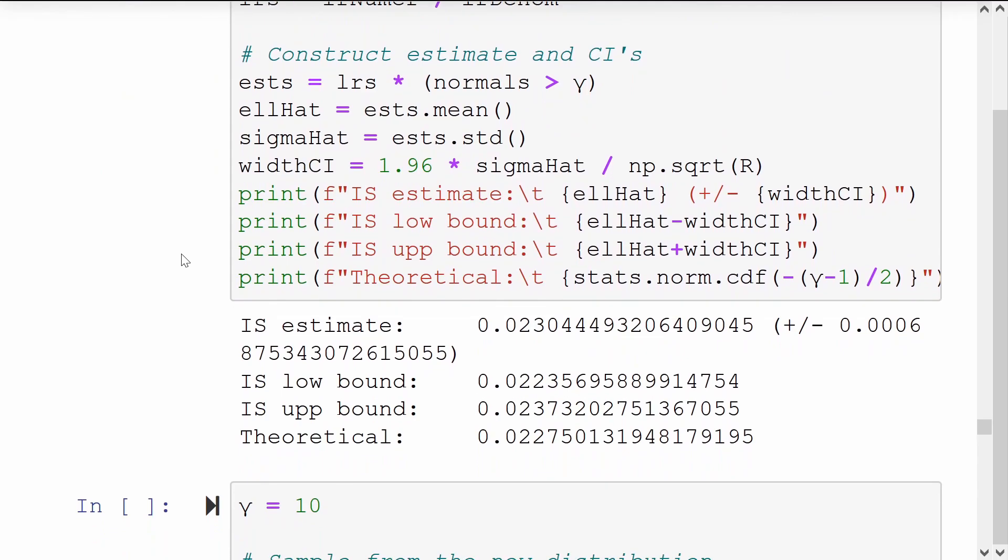This is not a particularly big improvement over the crude Monte Carlo result, because this event is not very rare to be honest. It's seen 2% of the time. We'll go to the more rare event, the threshold of gamma equals 10.